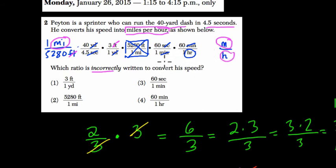So which one is incorrectly written? Well, this one right here, 5,280 feet over for every one mile. Again, the ratio itself is correct, but it's not written in a way that leads to the answer that they want.